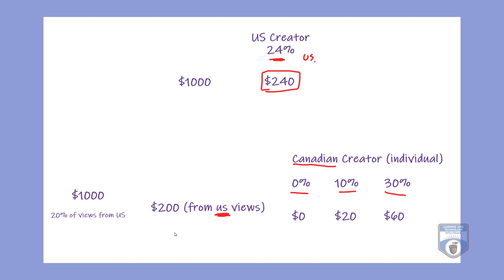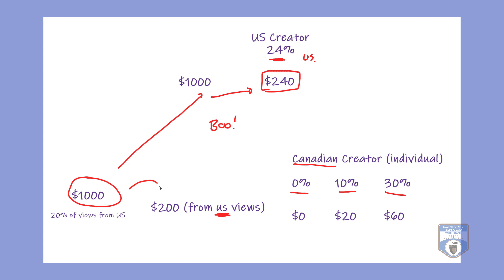Let's say you make $1,000 on YouTube. If you pay the 24% because they think you're a US citizen, you're going to have $240 withheld. But if you're a Canadian citizen and you fill out those forms, let's say 20% of your revenue comes from US views — well, on that $1,000, 20% would only be $200. And of that $200, you may pay 0% with nothing withheld, or you may pay 10% so $20 is withheld, or you may pay up to 30% so $60 is withheld.